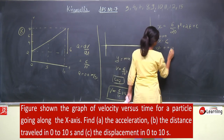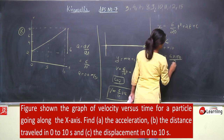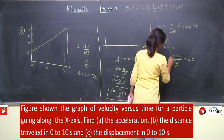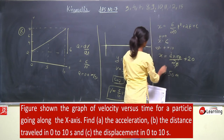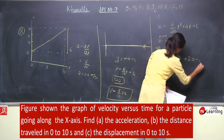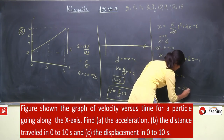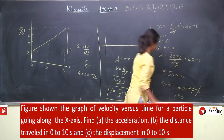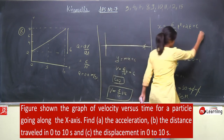At t = 10: x = 6 × 100/20 + 20 = 30 + 20 = 50 meter. तो distance कितना cover हो जाएगा? x final minus x initial, मतलब 50 + c minus c = 50. That is equal to 50 meter. This is the distance covered.